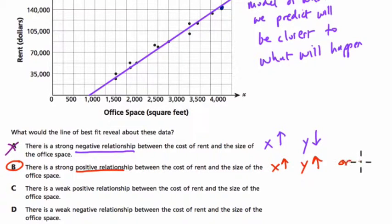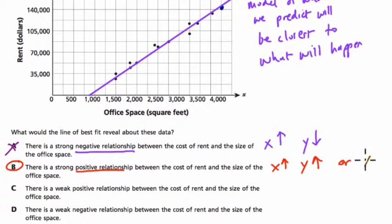I just want to point out that it also could be, and it's not in this example here, but as X goes down, Y goes down. This is still a positive relationship because the variables are moving in the same way. And that does actually apply to this graph. As the cost goes down, the space goes down. And then reading it the other way, as the cost goes up, the space goes up.